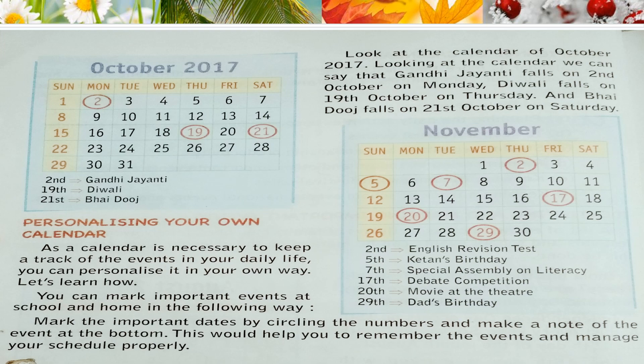Personalizing your own calendar. Now we will learn how we can personalize our own calendar. As a calendar is necessary to keep a track of events in your daily life, you can personalize it in your own way. You can mark important events at school and home by circling the numbers and making a note of the event at the bottom.